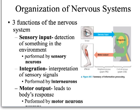There are three main functions of the nervous system. We have sensory input, in which the animal detects something in the environment, and sensory input is performed by sensory neurons. Then we have integration, or interpretation, of those sensory signals that happens in the brain and/or the spinal cord, and these are performed by interneurons. And then we've got motor output, which leads to how the animal responds to that detection in the environment, and these are performed by motor neurons.